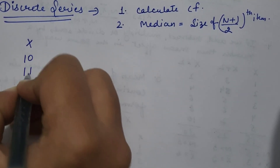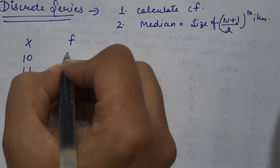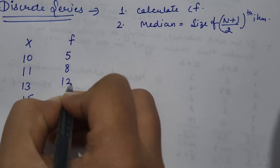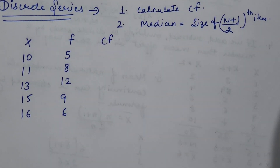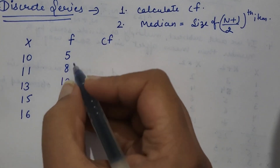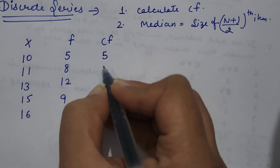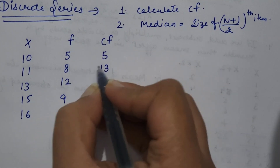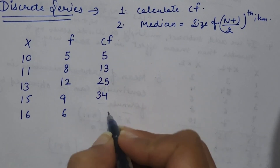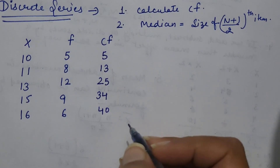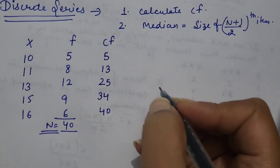Here observations are 10, 11, 13, 15, and 16, with frequencies 5, 8, 12, 9, and 6. First step is to calculate cumulative frequency. For that, we just need to add the frequencies: 5, then 5 plus 8 equals 13, then 13 plus 12 equals 25, then 25 plus 9 equals 34, then 34 plus 6 equals 40. So the total frequency sum is 40, which represents the number of observations.